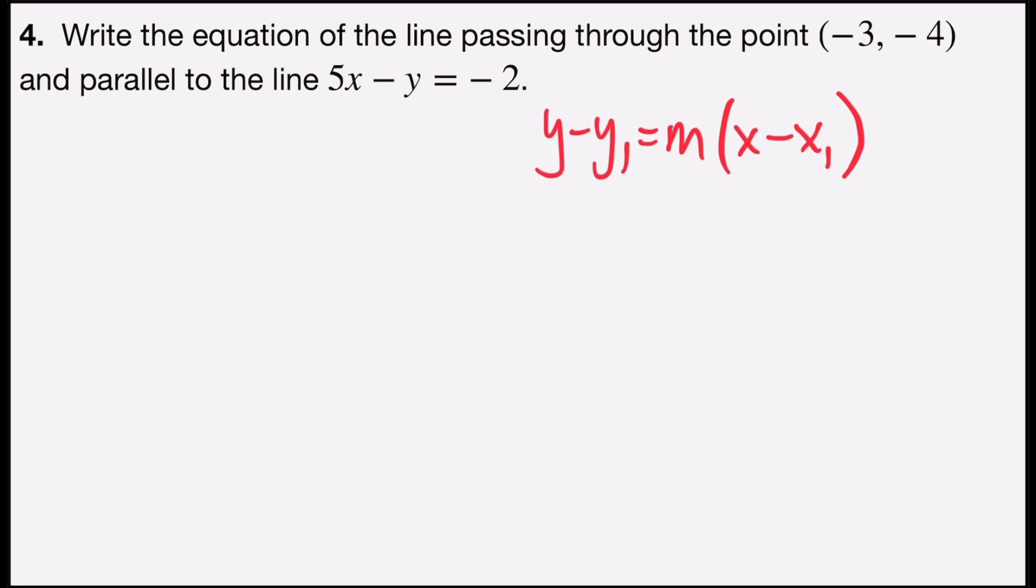And I need to know a point, which is given in the problem as (-3, -4), and a slope. We want a slope that's parallel to the line 5x - y = -2.